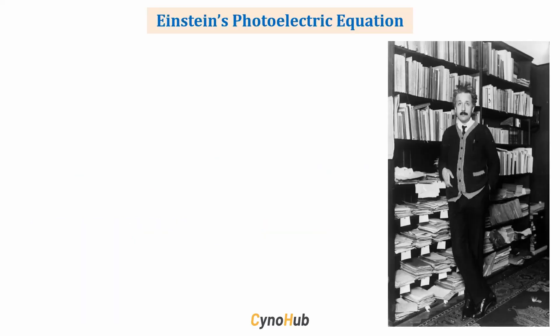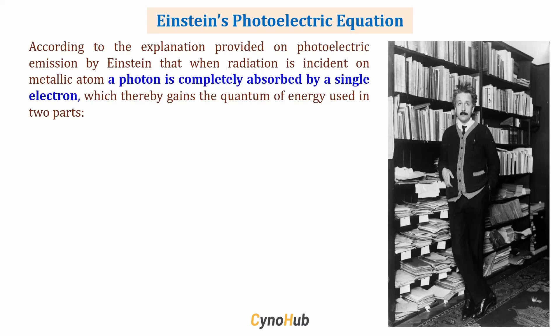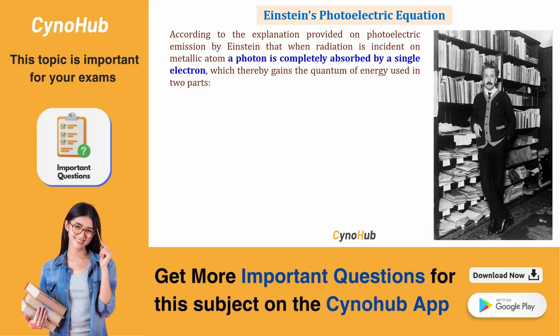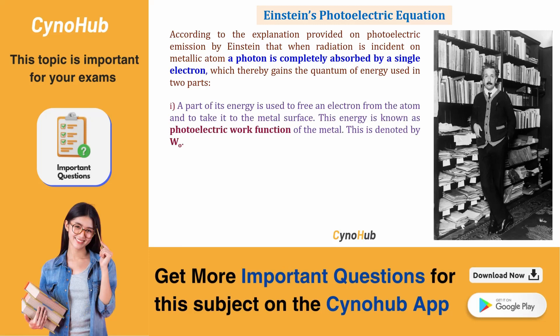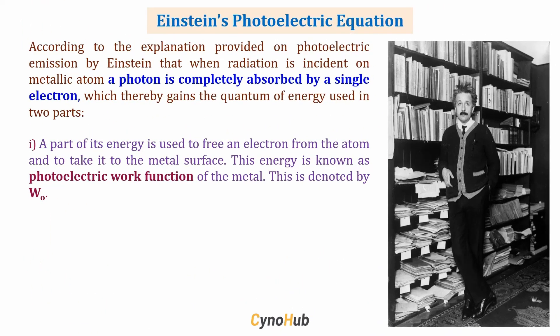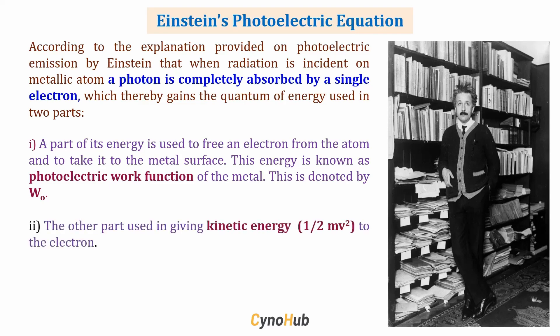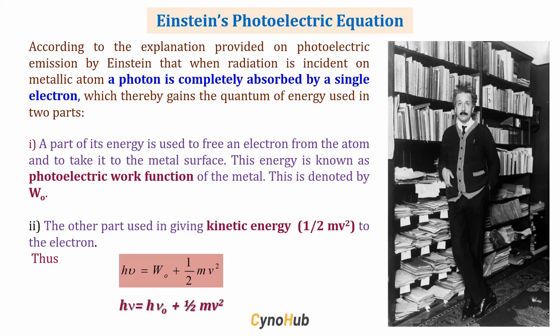Einstein's photoelectric equation: according to Einstein, when radiation falls on a metal surface, the photon is completely absorbed by an electron. This quantum energy is utilized in two ways — part of it is used to free the electron from the atom and bring it to the metal surface, known as the photoelectric work function W₀, and the remainder imparts kinetic energy ½mv² to the electron. The equation is: hν = W₀ + ½mv², where hν is the photon energy. This can also be written as hν = hν₀ + ½mv², where W₀ = hν₀ and ν₀ is the threshold frequency.